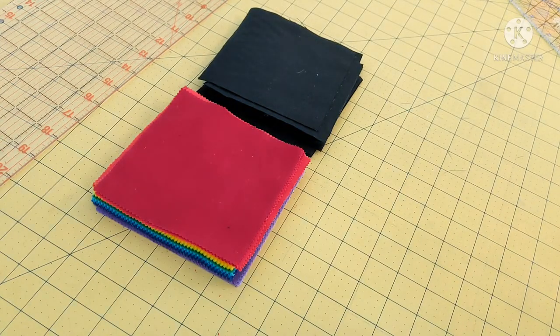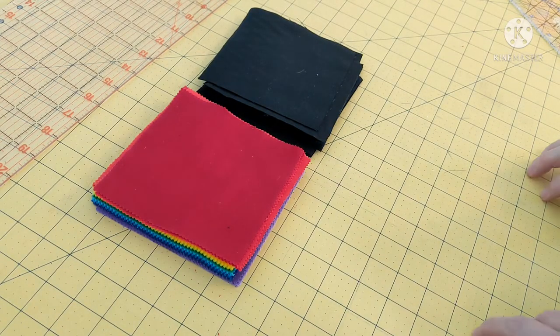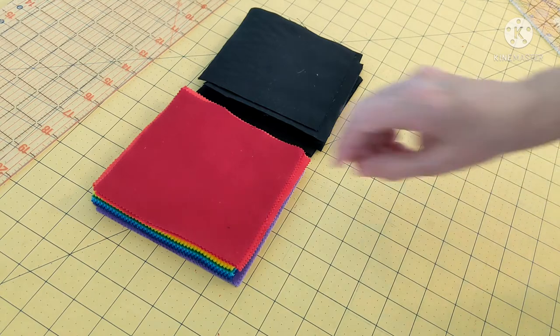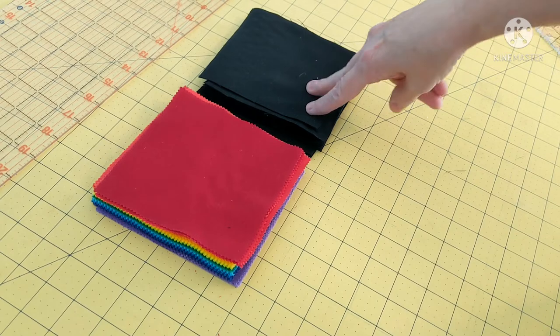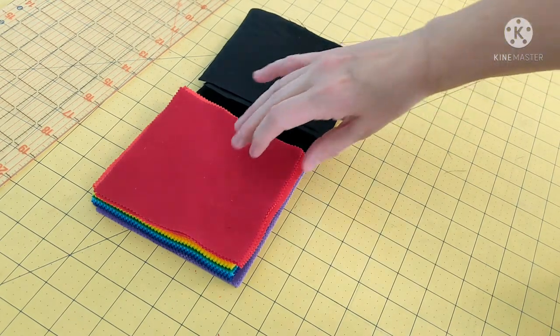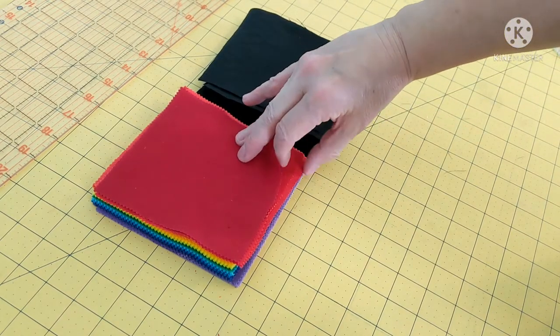Hello and welcome to our sewing table. Today we're going to be making a project using five inch squares. I have a rainbow charm pack and then I have some black squares that I cut out of yardage. We're making a variation of the churn dash block.